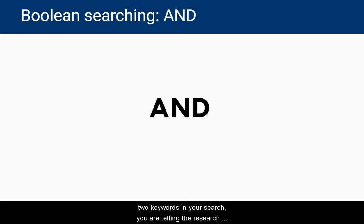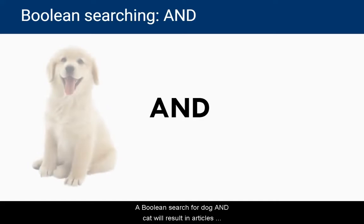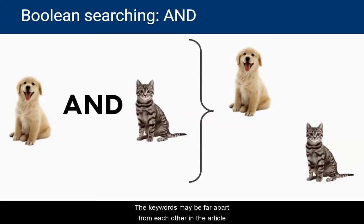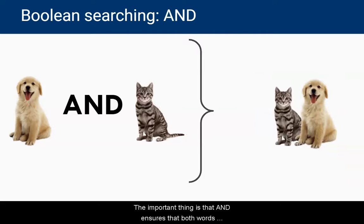When you use AND between two keywords in your search, you are telling the research database that you want both of those words in your search, but they don't necessarily have to be next to each other. A Boolean search for "dog AND cat" will result in articles that mention both dogs and cats. The keywords may be far apart from each other in the article, or they might be right next to each other. The important thing is that AND ensures that both words appear in your search results.